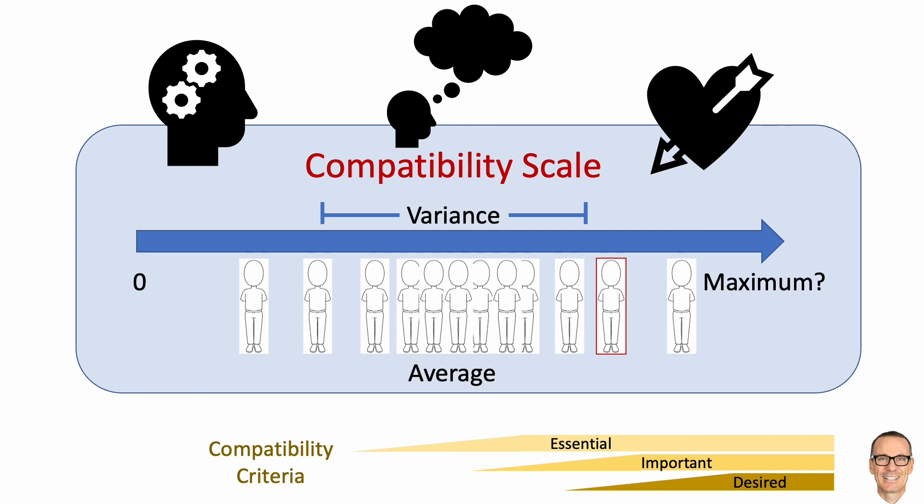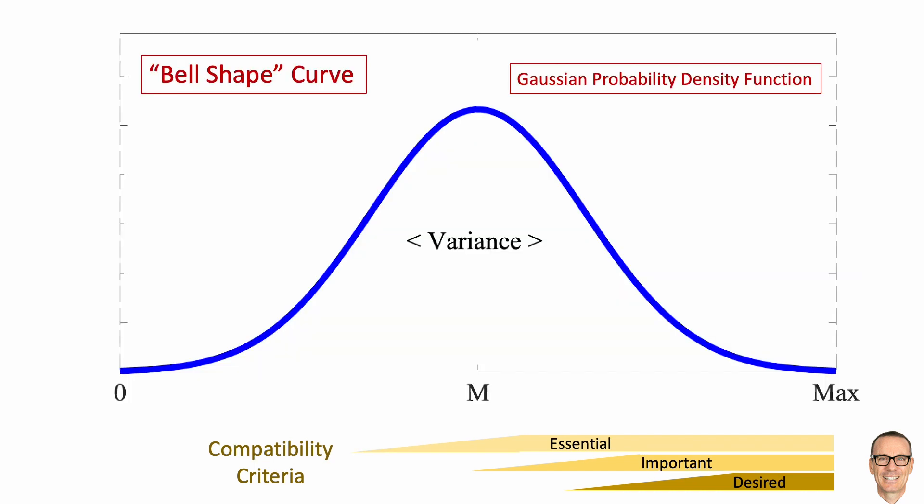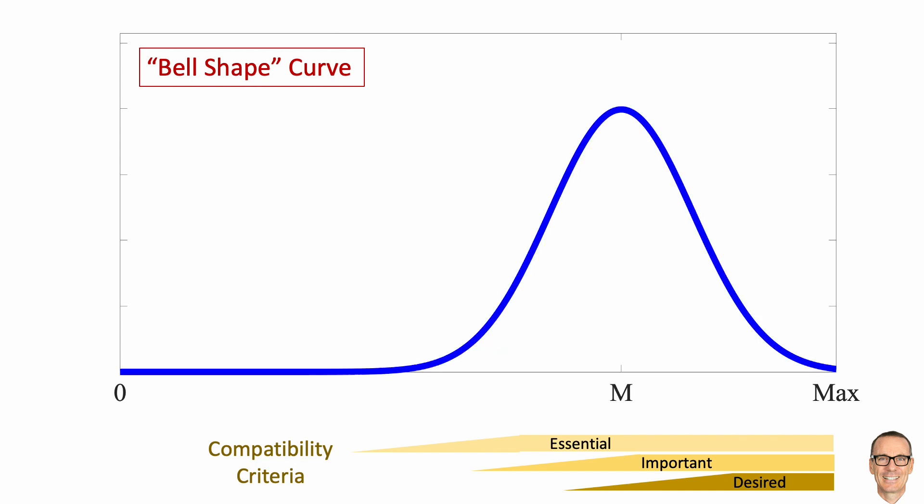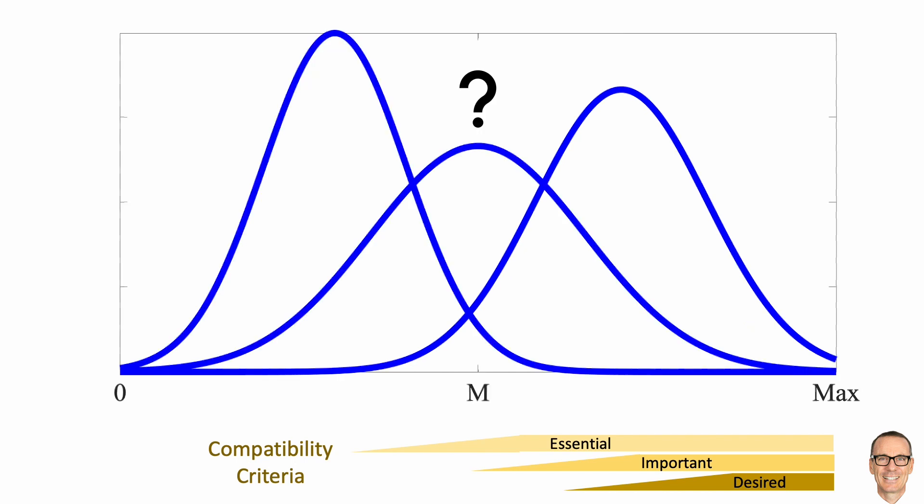Now, for a range of reasons, it's reasonable to model the population distribution as a bell-shaped curve. The parameters of this curve depend on your personal criteria for compatibility. If you've got very specific criteria, your curve will look like this, where most people won't even meet your essential criteria. If you're more easygoing, your curve will look like this. The question is, how do you know what your curve looks like?